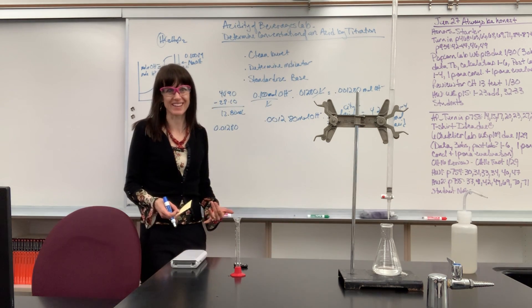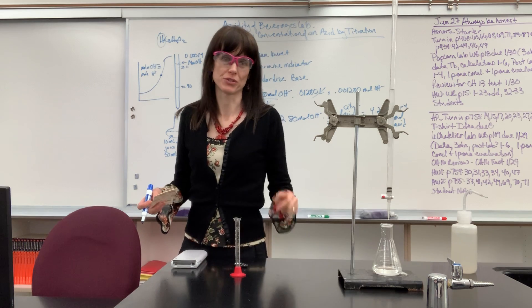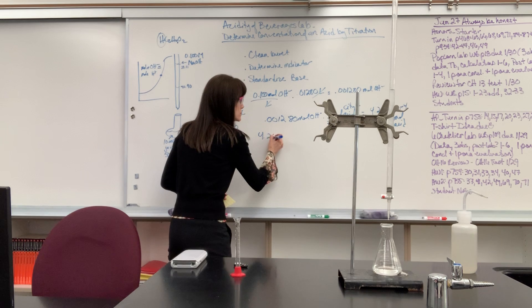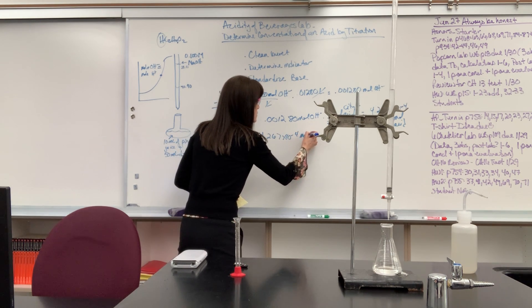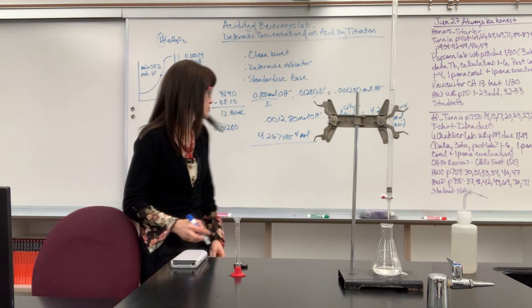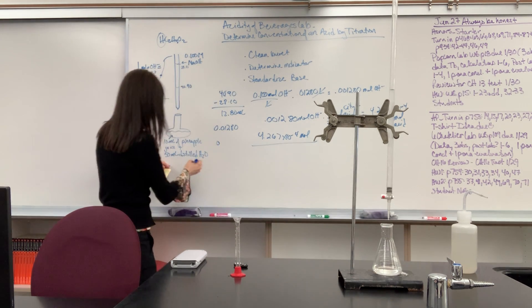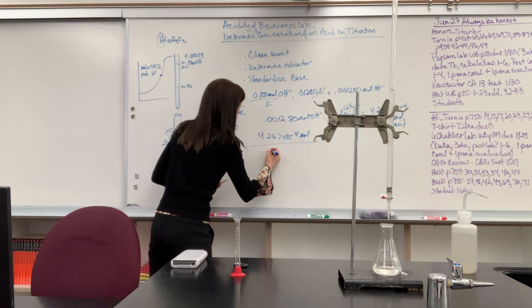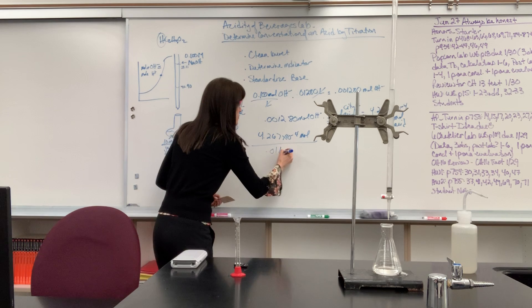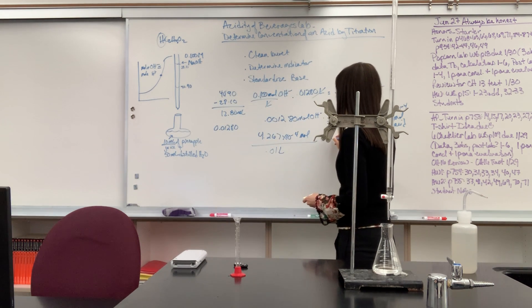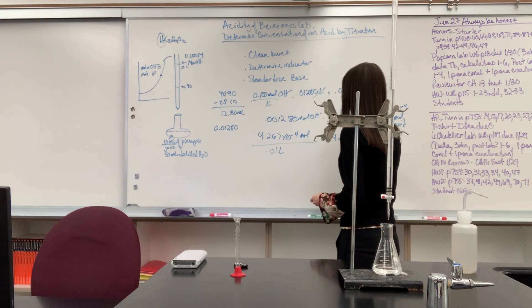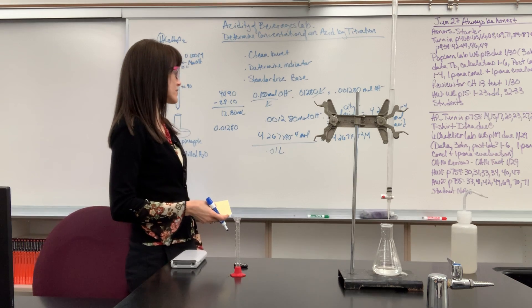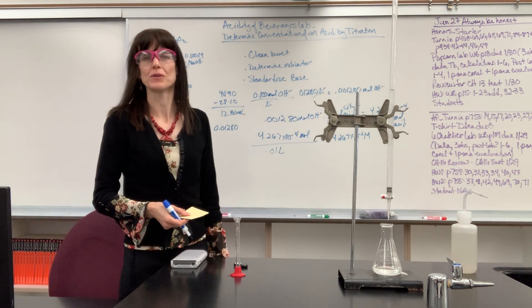Now I want to know molarity. So it's the molarity of the pineapple juice. Well, I put 10 mils pineapple juice. So if we take the 4.267 times 10 to the minus 4 moles, just divide it by the volume of the pineapple juice. Remember we had, right here, there it is, 10 mils, convert that into liters, just divide by 1,000, 0.01 liters, and that is going to give us 4.267 times 10 to the minus 2 molar. So pretty cool. We found the molarity.